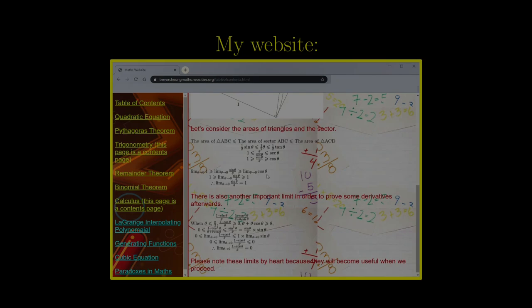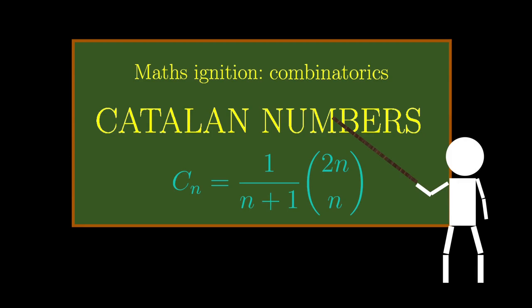I learned about Catalan numbers in a combinatorics course outside school when I was 13, and I didn't think too much of it. However, one year later I came across this kind of square maze where you need to go from the bottom left to the top right.